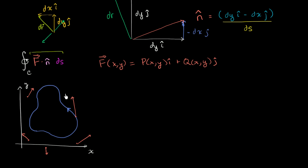Associated with that point, there is a vector — that's what the vector field does. So F might look something like that. And then we're going to dot it with the unit normal vector at that point, n-hat. When you take the dot product, you get a scalar quantity — essentially just a number. That tells you how much those two vectors go together. If they're completely orthogonal, you get zero; if they go completely in the same direction, you multiply their magnitudes.